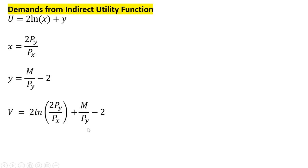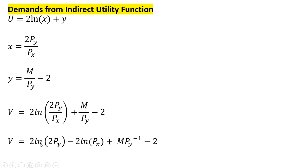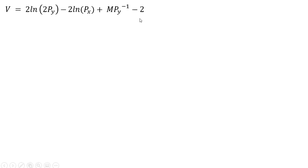We can simplify this a little bit, following the rules of natural logs. Then we move the price of good y into the numerator, giving us our indirect utility function.